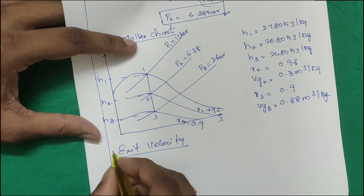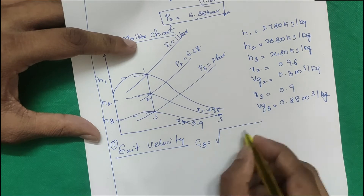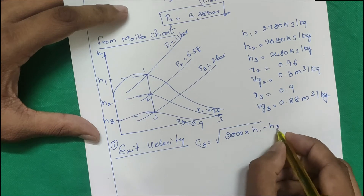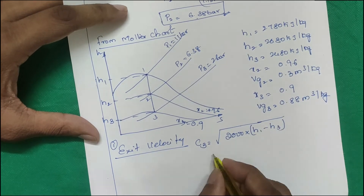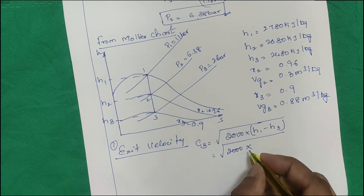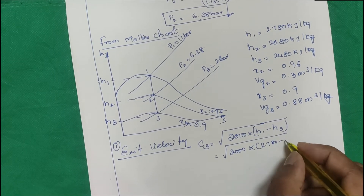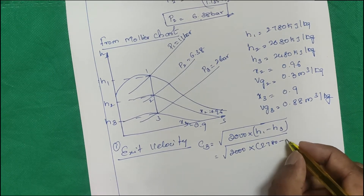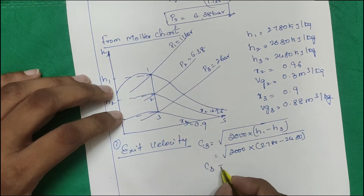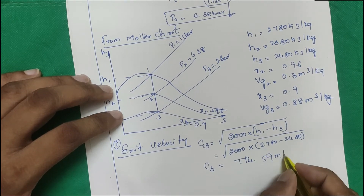To find exit velocity, use the formula: c3 = √(2000 × (h1 − h3)). With h1 = 2780 and h3 = 2480, you get c3 = 774.59 m/s.